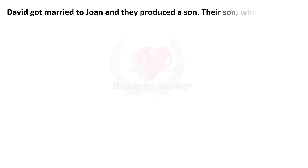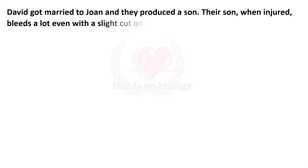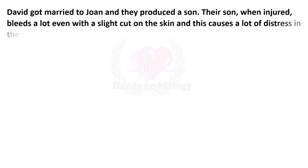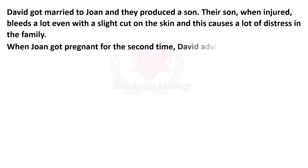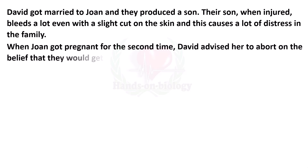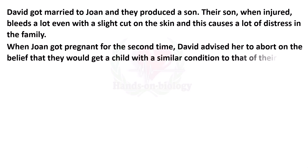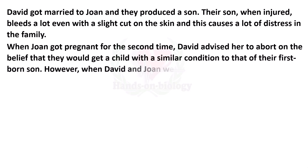David got married to Joan and they produced a son. Their son, when injured, bleeds a lot even with a slight cut on the skin, and this causes a lot of distress in the family. When Joan got pregnant for the second time, David advised her to abort on the belief that they would get a child with a similar condition to that of their firstborn son.